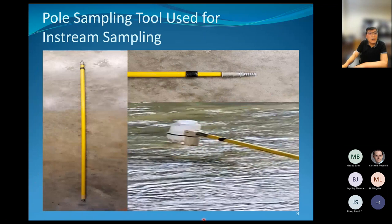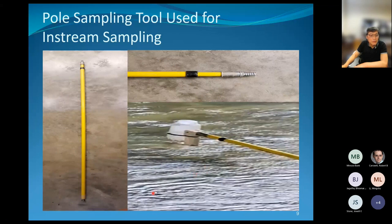We also take in-stream samples using pole sampling tools. This pole can be extended as long as 25 feet, with bottles attached at the end. Our researcher stands on the deck and uses this pole to get stream samples directly from the river underneath the bridge.